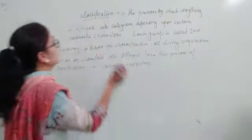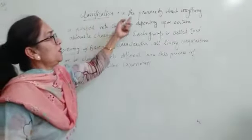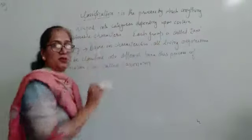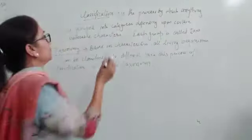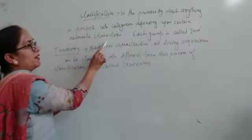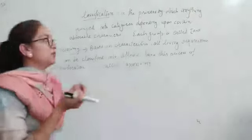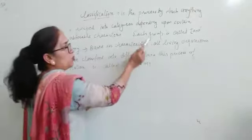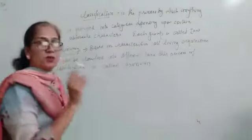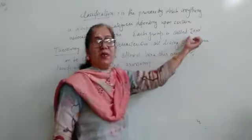Let's see what is classification. Classification is the process by which anything is grouped into categories depending upon certain observable characters. Observable means what is visible. Now each group can be small or large. These groups that we have made are called taxa.